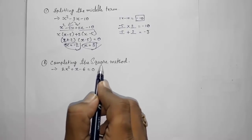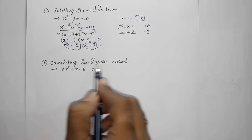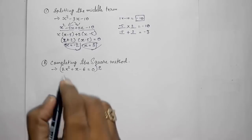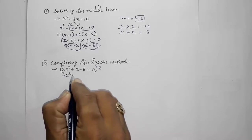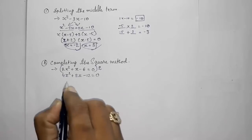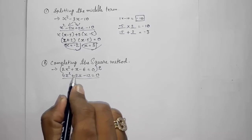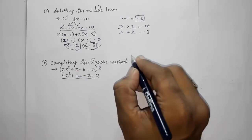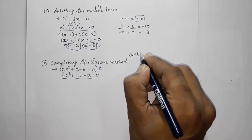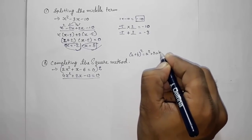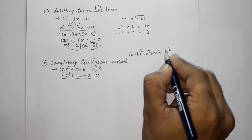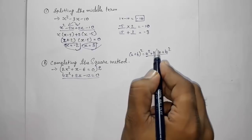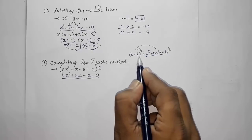I have done this method in a separate video — the link will be in the description. Here I will solve by the multiplying method. We multiply the whole equation by 2, giving 4x² + 2x − 12 = 0. For completing the square, recall the identities: (a + b)² = a² + 2ab + b², and (a − b)² = a² − 2ab + b².